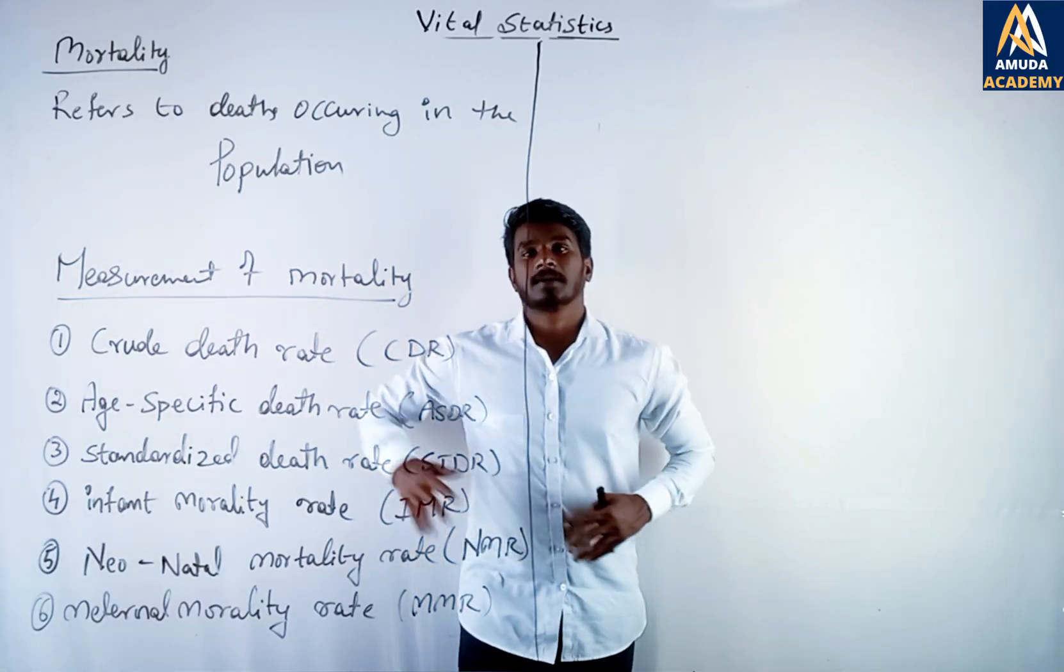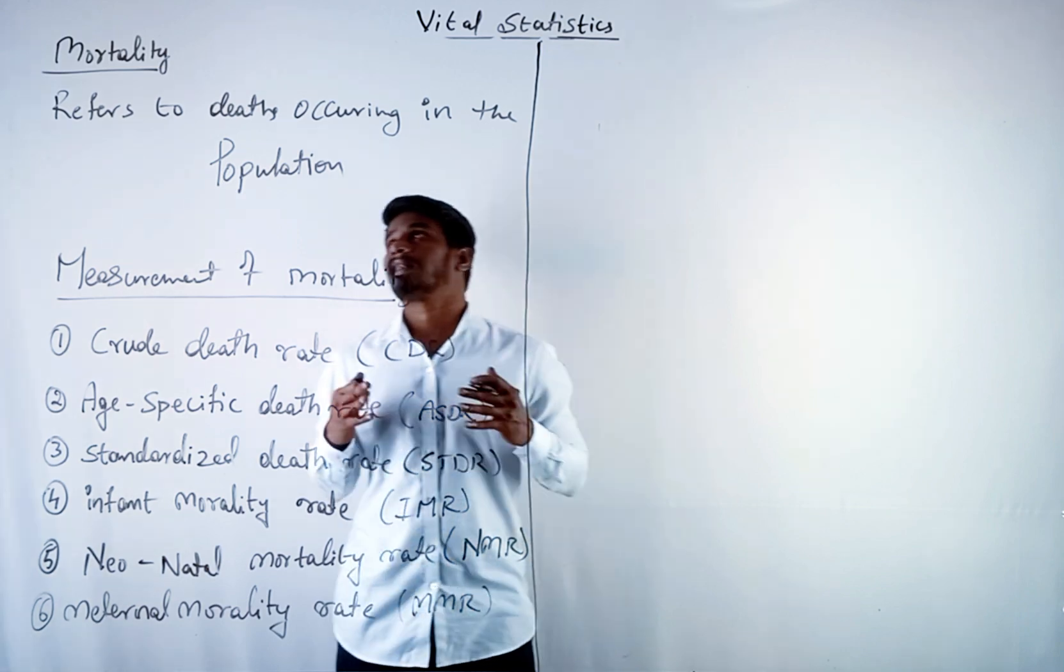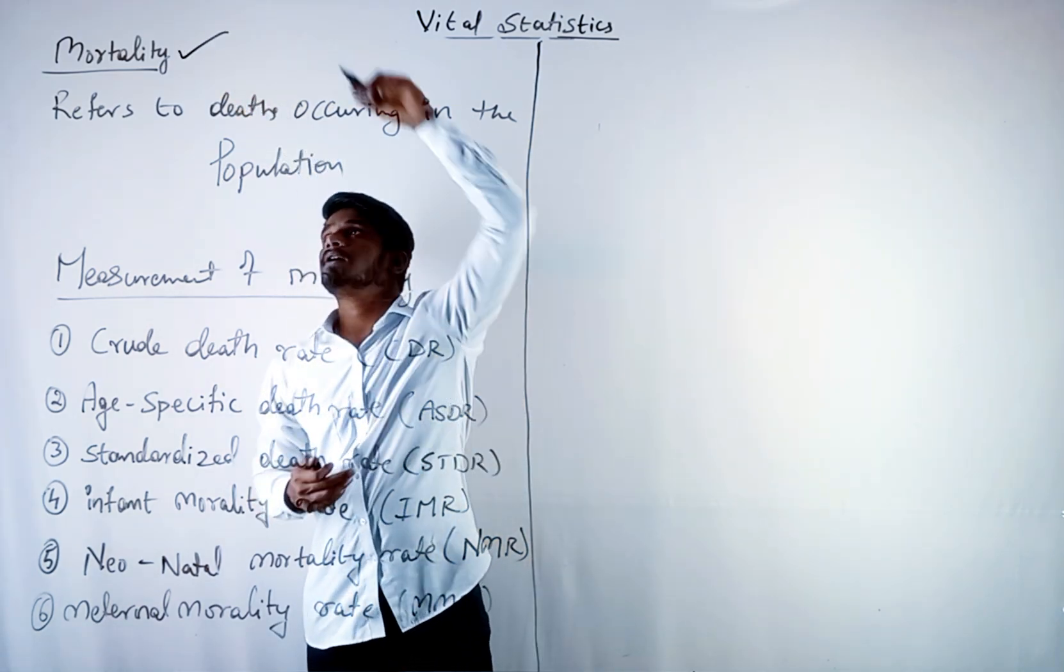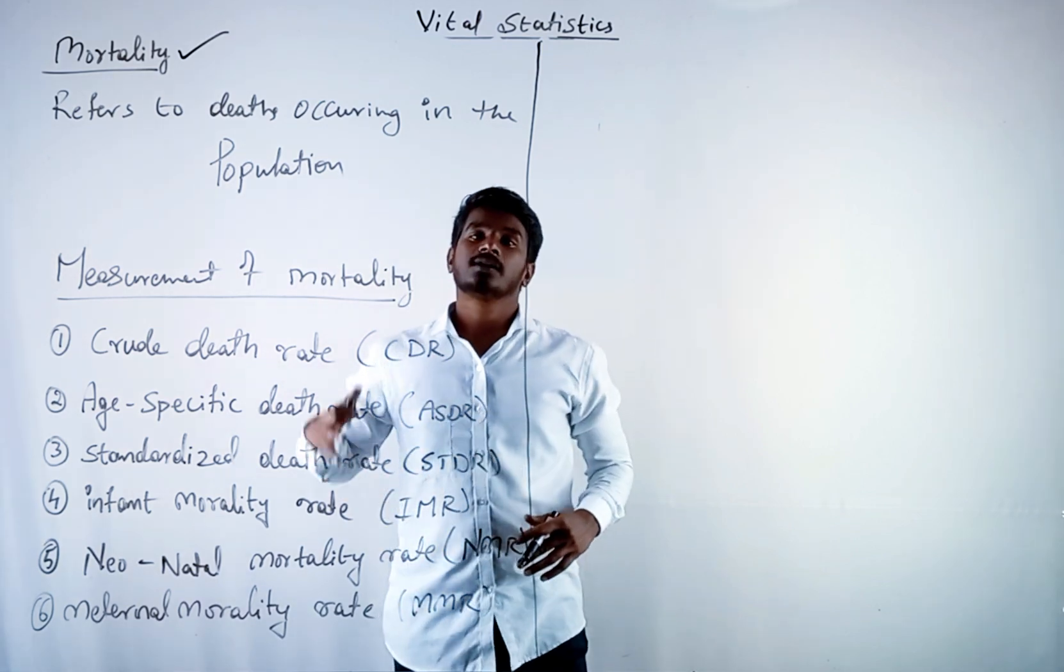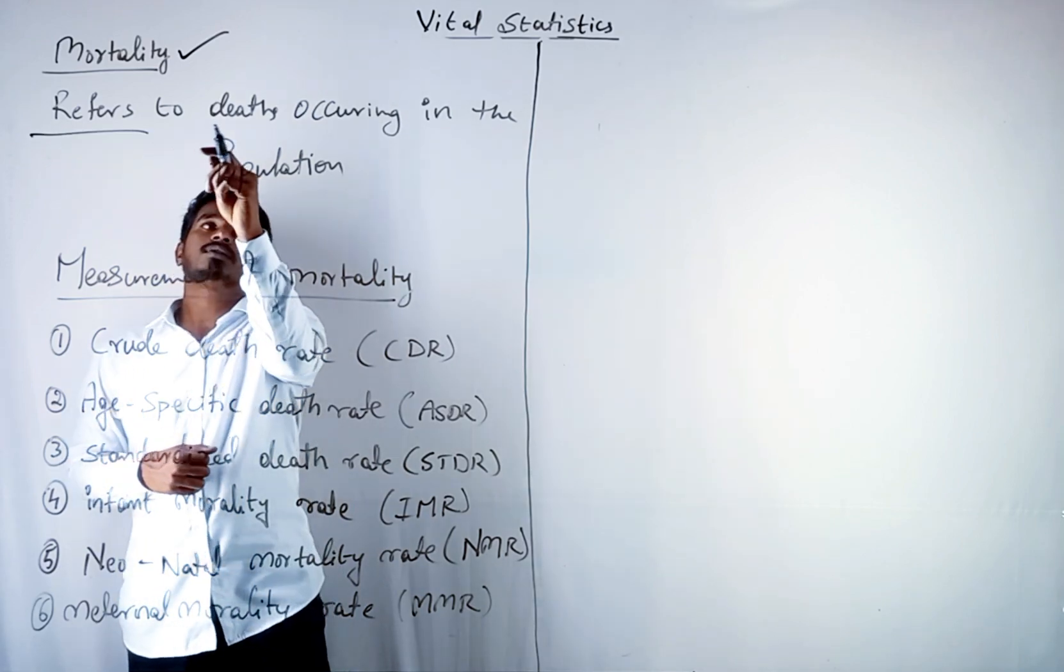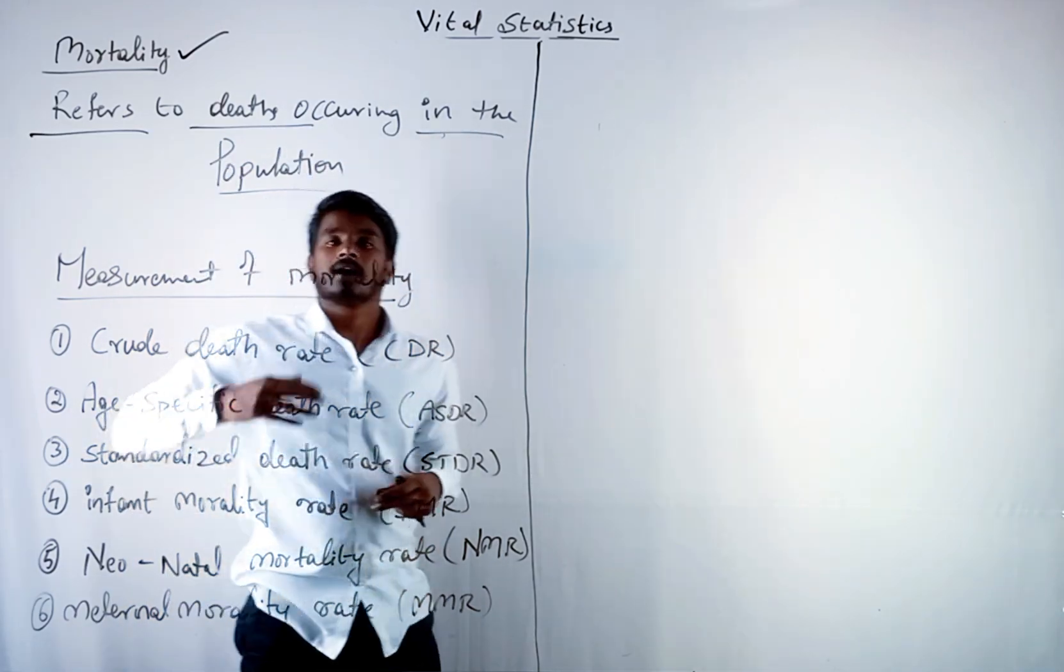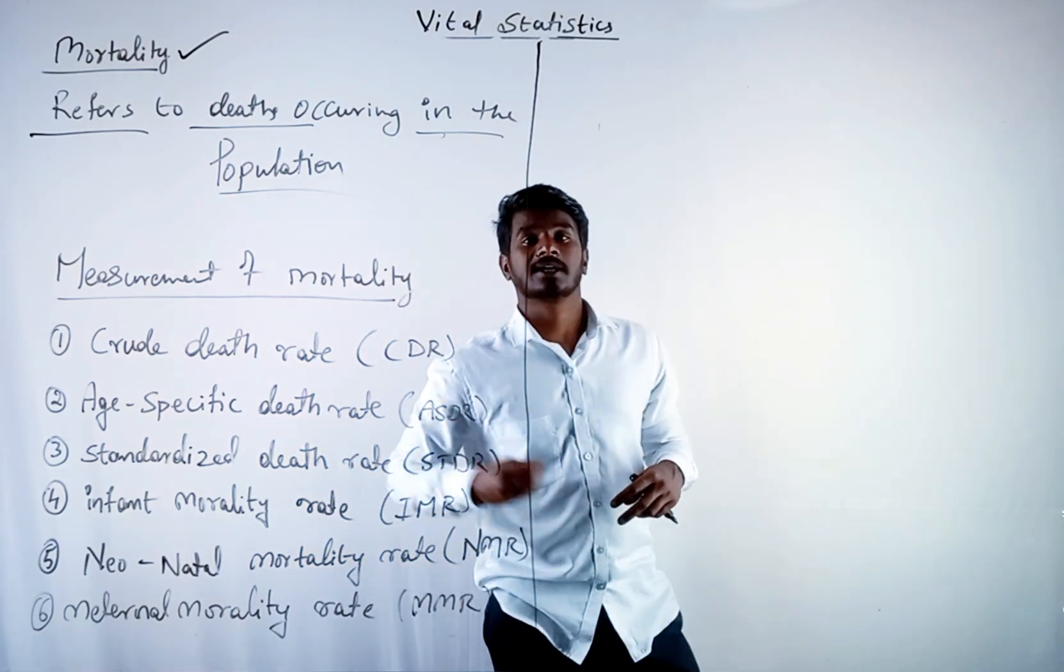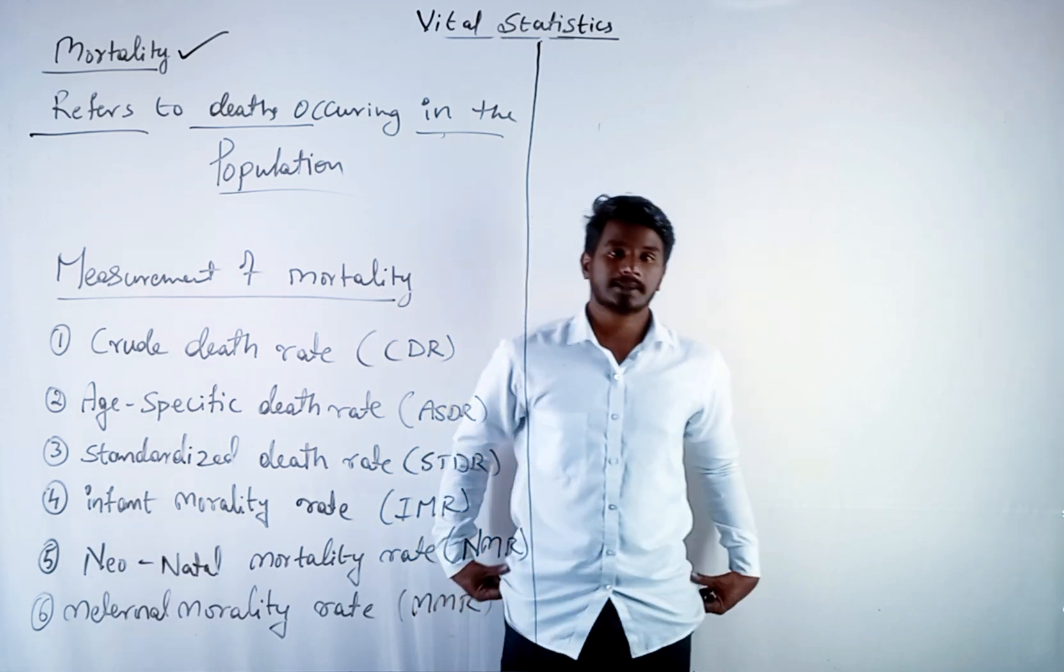Welcome to Amodh Academy. In this video we are going to discuss the last topic, mortality, in our vital statistics. So let us begin. What do you mean by mortality? It refers to deaths occurring in the population. Earlier we calculated birth; in the same way we should calculate death also.